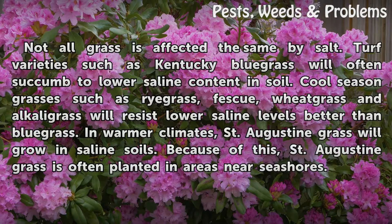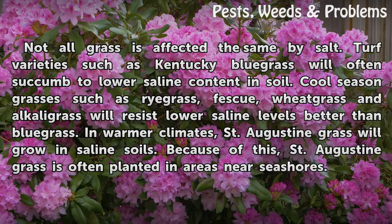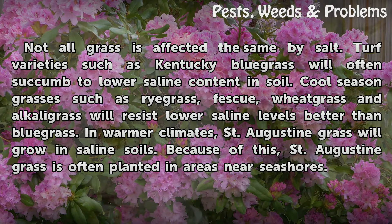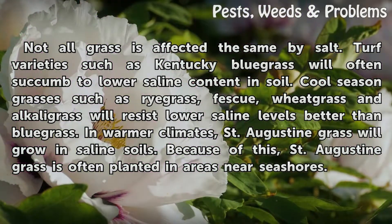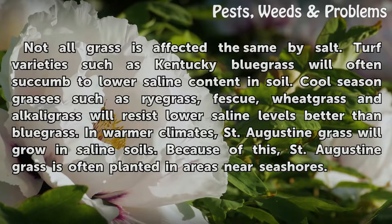Not all grass is affected the same by salt. Turf varieties such as Kentucky bluegrass will often succumb to lower saline content in soil. Cool season grasses such as ryegrass, fescue, weedgrass, and alkaligrass will resist lower saline levels better than bluegrass. In warmer climates, St. Augustine grass will grow in saline soils. Because of this, St. Augustine grass is often planted in areas near seashores.